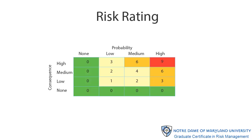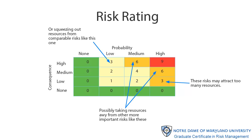The risk matrix shown previously conforms to Cox's rules of weak consistency. This alternate matrix does not. One upshot of this is that scarce risk management resources may be misallocated. In this example, a high-low risk is rated low overall, while a low-high risk is rated as medium. This could result in too many resources going to manage one risk, or too few resources going to manage the other.